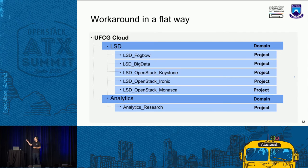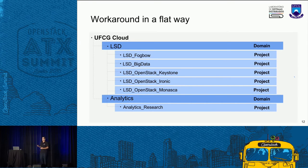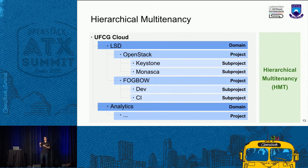We needed a workaround in a flat way. We would create an LSD domain, and inside this domain, create a list of projects — LSD Fogbowl, LSD Big Data, and so on for OpenStack Keystone and Ironic. We had problems with that workaround: how can we manage access control for a lot of users when you have a big list of projects inside the domain? And how can we organize our resources to find some instance in a big list of projects? So we implemented Hierarchical Multi-Tenancy, providing the ability to create sub-projects. Now we can create a project OpenStack inside the LSD domain, and inside it create sub-projects for Keystone, Monasca, and so on — representing departments and sub-departments in a hierarchical way.